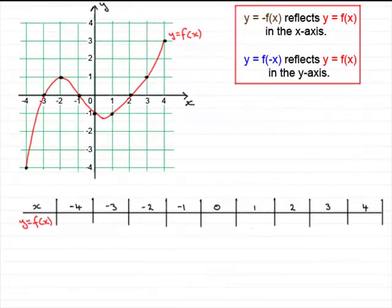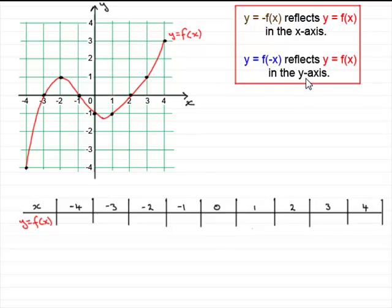Hi. I'm often asked: why does y equals minus f of x reflect the graph of y equals f of x in the x-axis, and why does y equals f of minus x reflect the graph of y equals f of x in the y-axis? To answer that question, I've sketched a general graph of the form y equals f of x, but this could apply to any graph, not just this one.